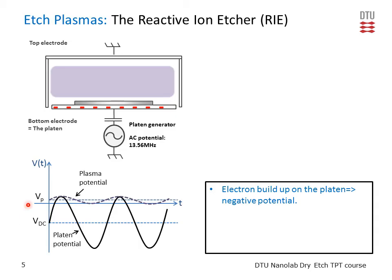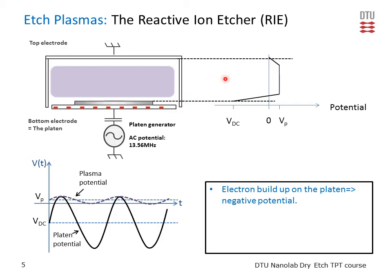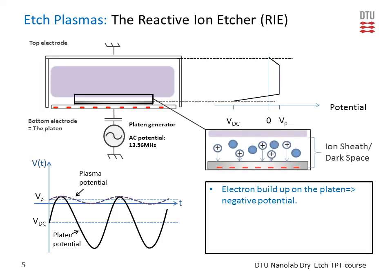The plasma potential is a little bit positive. Looking at the potential across the chamber: it is positive in the plasma, zero at the top electrode, and on average negative at the bottom electrode where our sample lies. Close to the electrode, there is a space between the plasma and the electrode — because the electrode is negative, it repels electrons, so the plasma is confined a little bit away from the bottom electrode. Where there are no collisions taking place, no light comes out, and therefore this region is called the dark space.